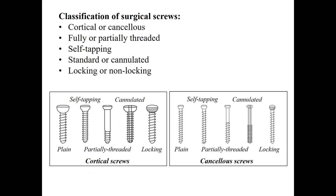There are different ways to classify surgical screws. A cortical screw is designed to engage in cortices, while a cancellous screw gains purchase in the cancellous bone. A screw could be threaded along its total length or partially. A self-tapping screw has a cutting flute at the tip, which cuts a channel into the bone for threads. A standard screw has a solid central core, while a cannulated screw has a canal drilled through the core, which could be used to guide the screw over a guide wire.